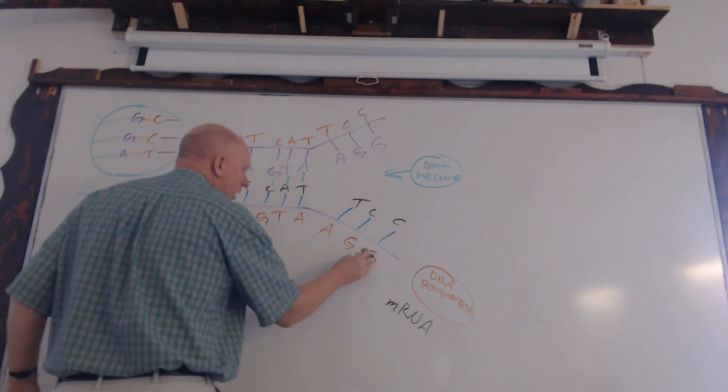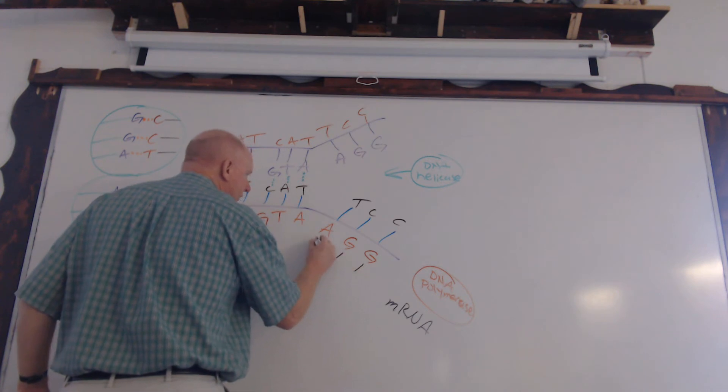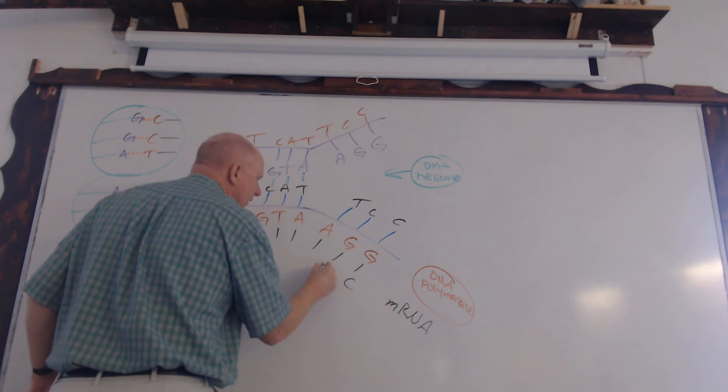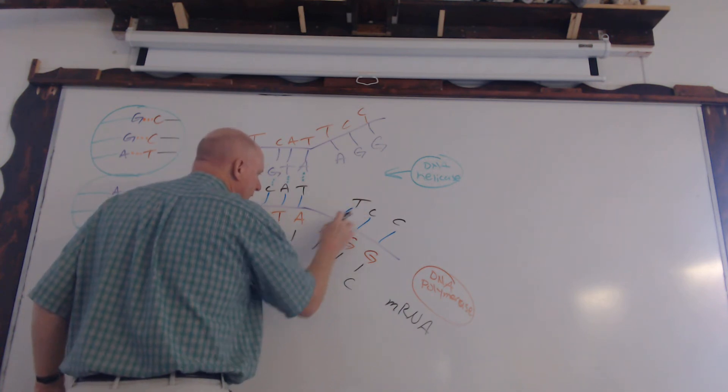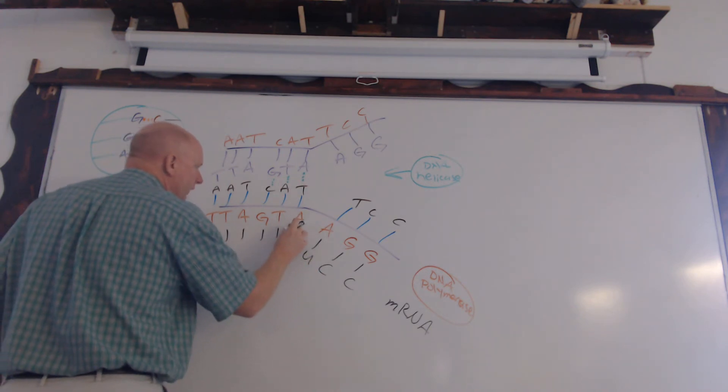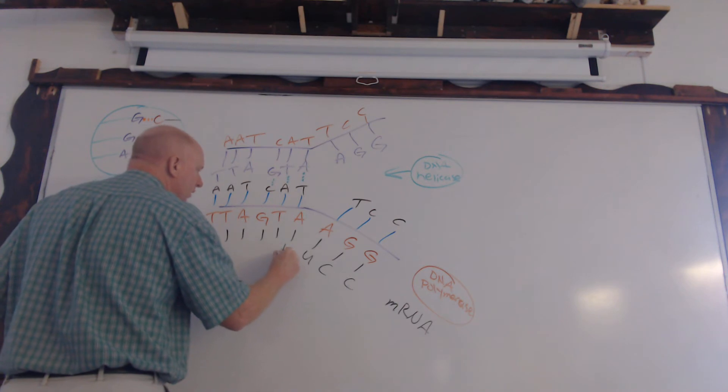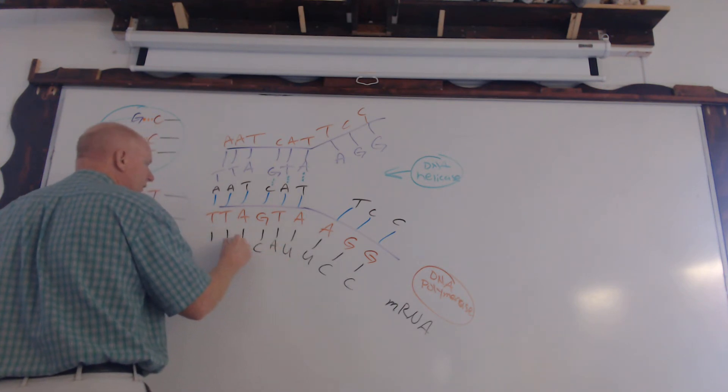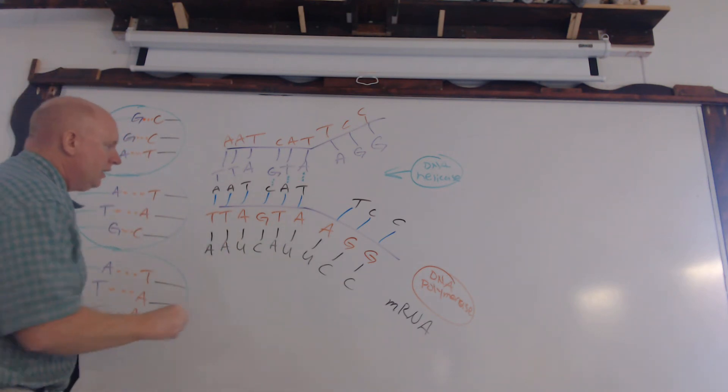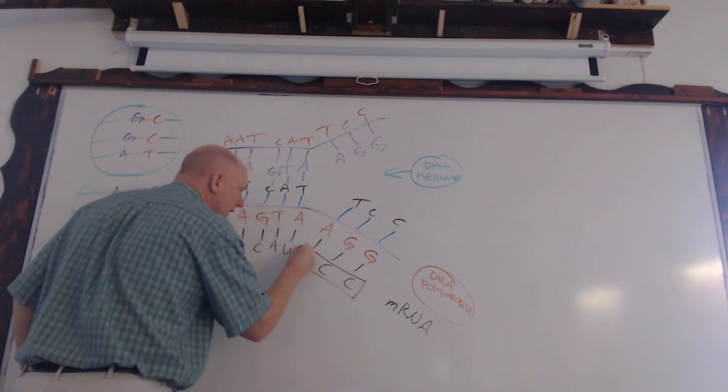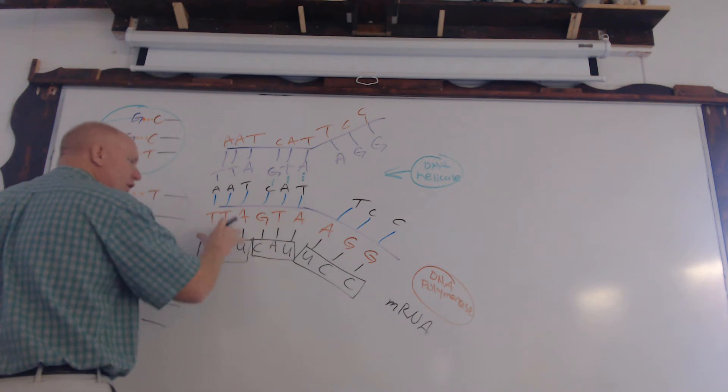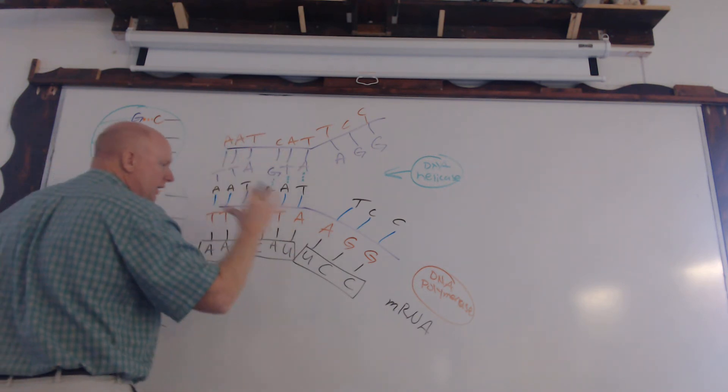So our complementary base pairs would be as follows. We know we've got cytosine, cytosine, and we've got to be careful here. It's not thymine because we need uracil here. And then here we've got, of course, not thymine, uracil, adenine, cytosine, uracil, adenine, adenine. And again, three letter codes. That's exactly what it is. That is a codon.